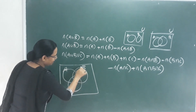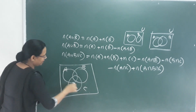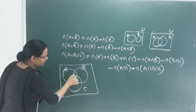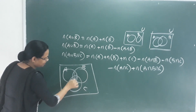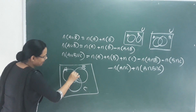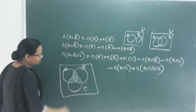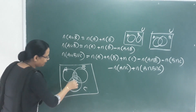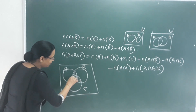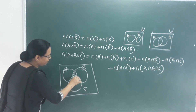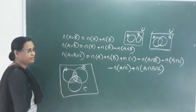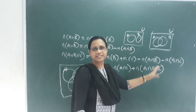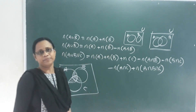Consider sets A, B, and C. If we subtract each pairwise intersection, we end up subtracting the common triple-intersection element too many times — that's why we have to add back the number of A intersection B intersection C.